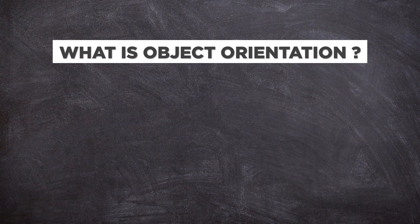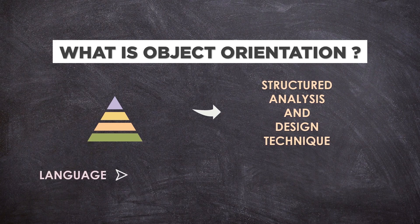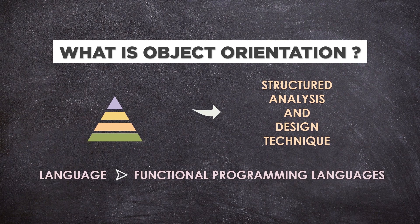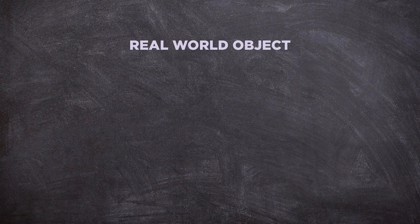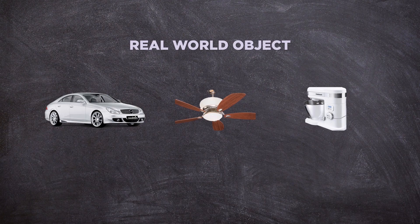So first of all, what is object orientation? The traditional approach mostly focused on structured system development, using structured analysis and design techniques and functional programming languages. But in the early 90s, object-oriented development became mainstream, where a programmer designs based on real-world objects like a car, fan, or even your kitchen mixer, which is why it is called object-oriented.